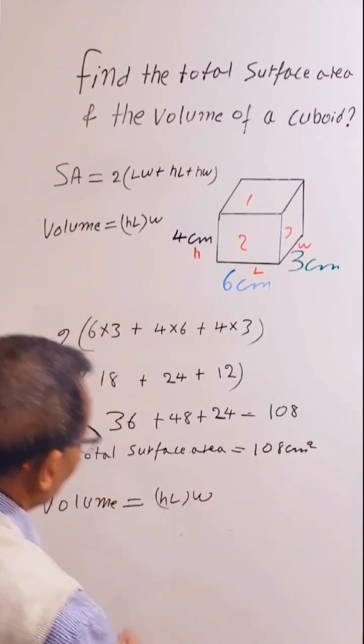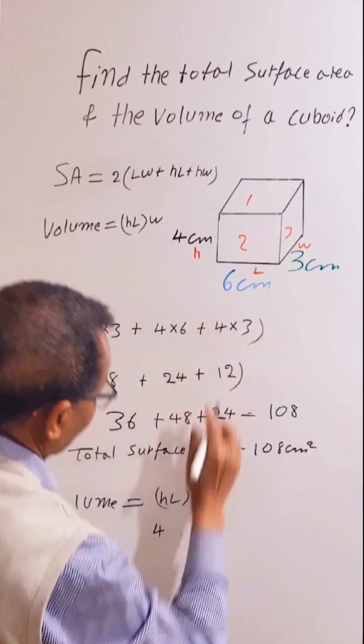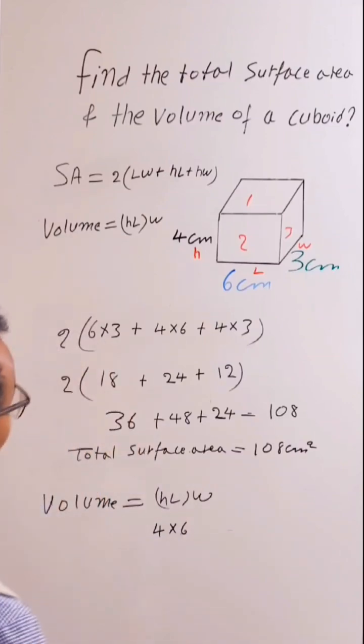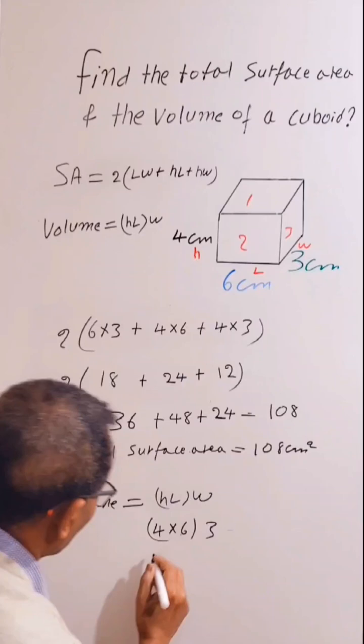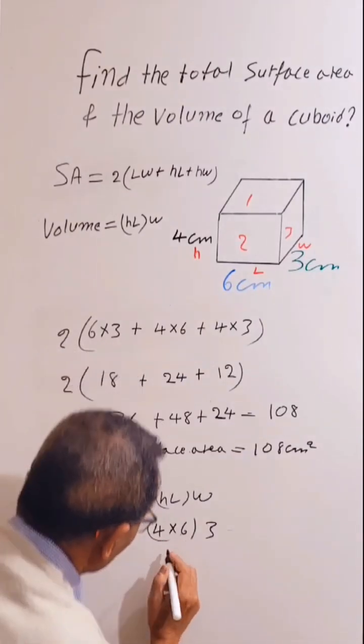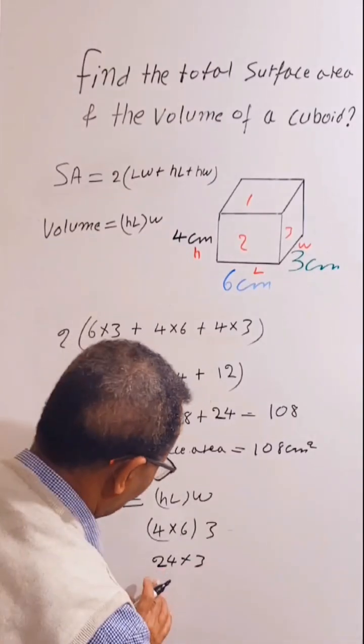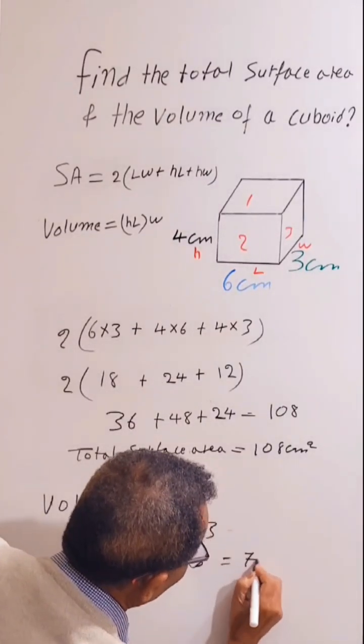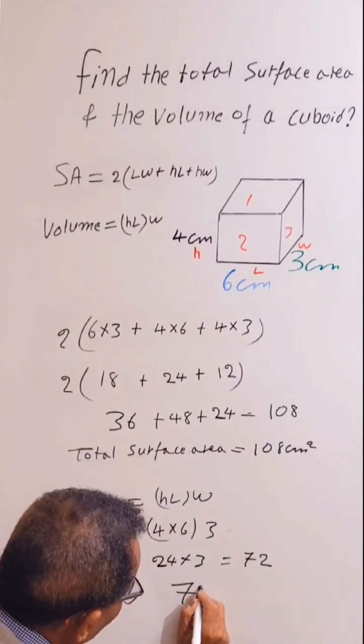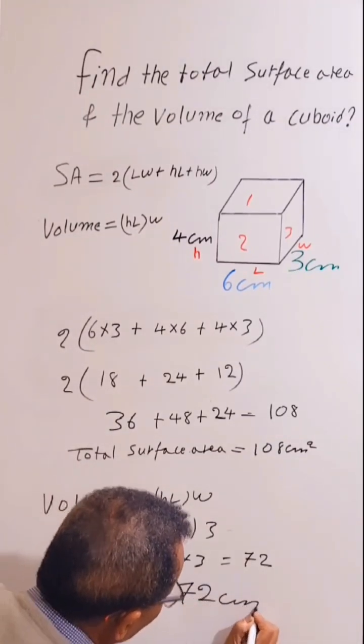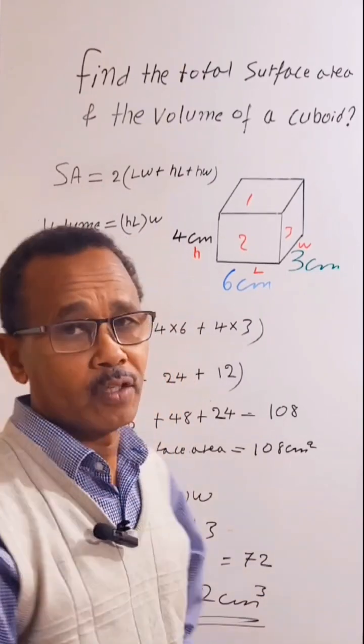So volume is equal to H times L, which is 4 times 6, times 3. So 4 times 6 is 24 times 3, which equals 72. Volume is equal to 72 centimeters cubed, because it is volume. Thank you very much.